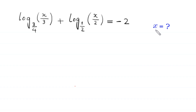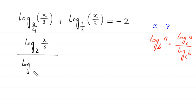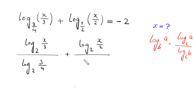So let's start. By using the log property log base b of a is equal to log base c of a divided by log base c of b, the first term can be written as log base 2 of x/3 divided by log base 2 of 3/4, and the second term as log base 2 of x/2 divided by log base 2 of 1/2, equal to negative 2.